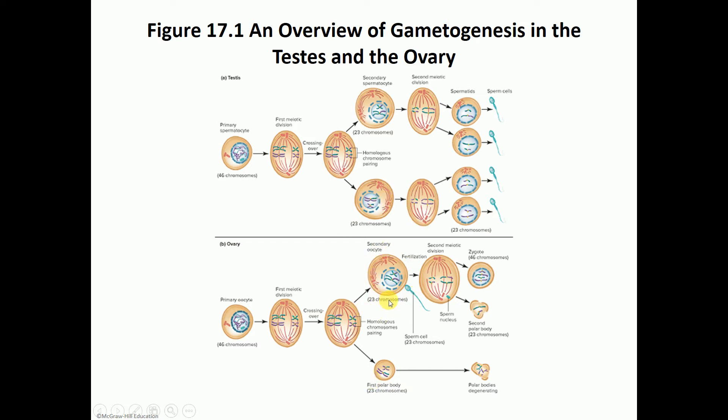The secondary oocyte does not go through a second meiotic division unless it is fertilized. The secondary oocyte is what is ovulated, and if fertilization doesn't happen it will degenerate without going through the second meiotic division.